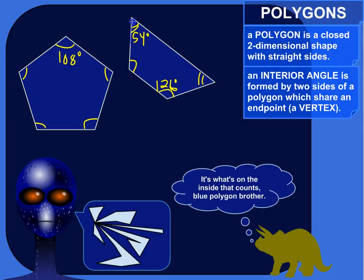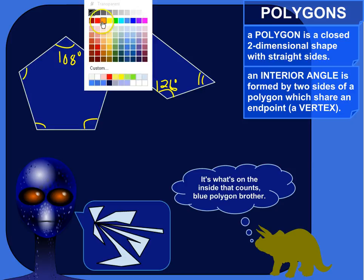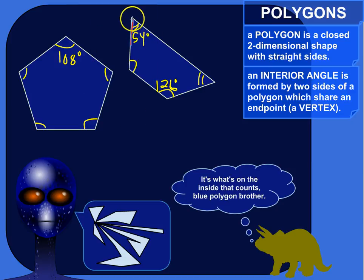So for example, here is a side of a polygon, I've got a four-sided polygon. This side and this side share an endpoint right here, they share a vertex right there. And so they form an interior angle right here, it's a 54 degree angle.